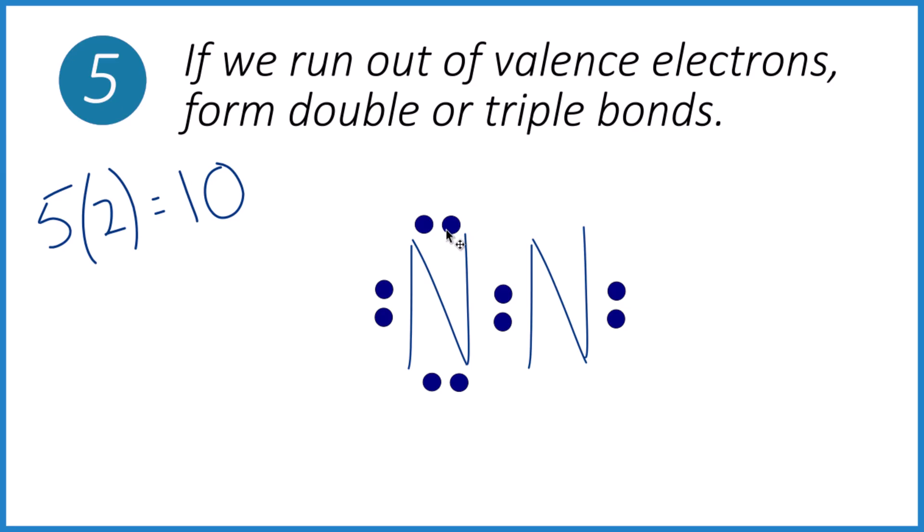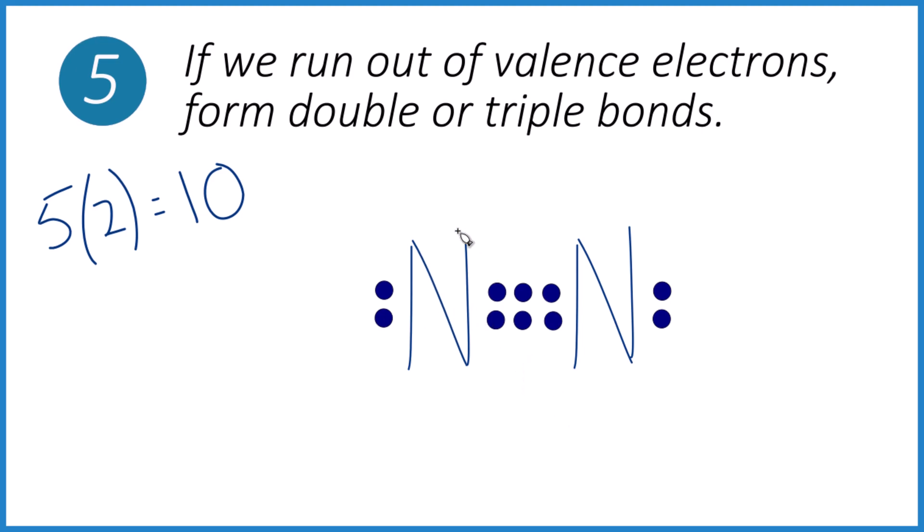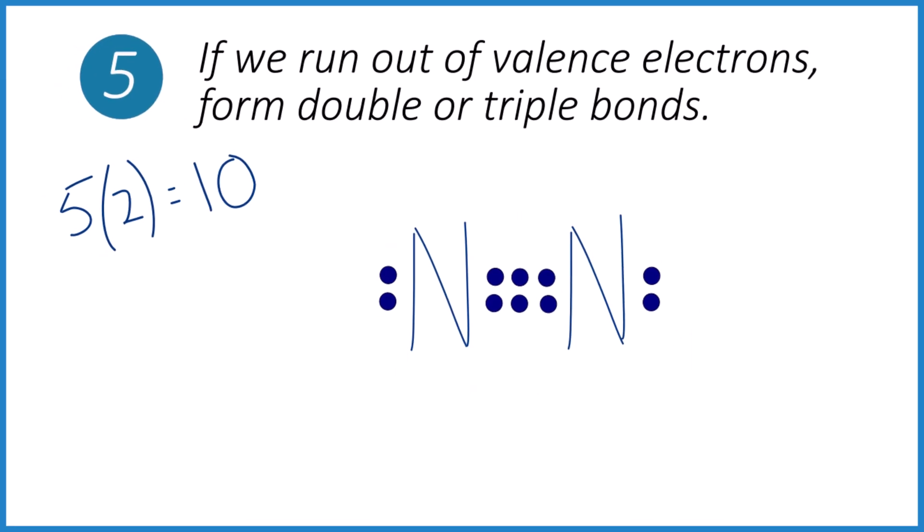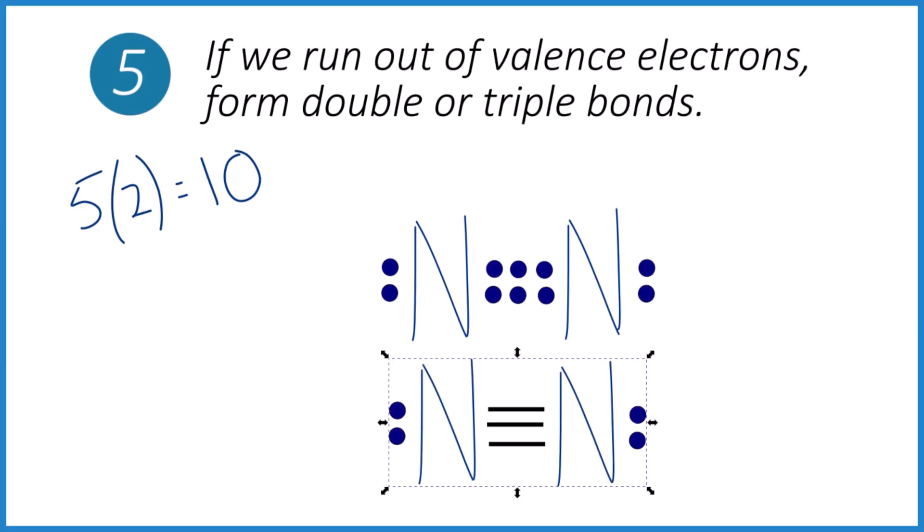So you can see the problem and here's how we can solve it. Still using 10 valence electrons. Octet. Octet. We're good with that triple bond. And you could even write it like this right here if you wanted to.